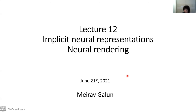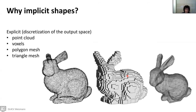So let's start. In the previous lecture, we discussed the topic of representation of shapes. When we speak about shapes, we are essentially interested in 3D representation in the output space, for example, as a result of some reconstruction process. I would like to ask the question: why do we speak about implicit shapes? Let's try to see the disadvantages of using explicit representation in the output space.